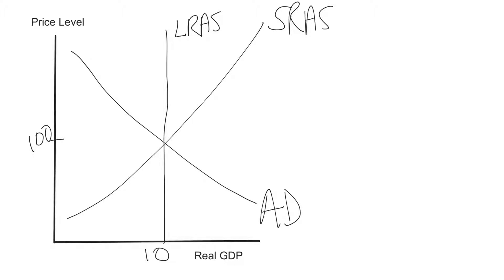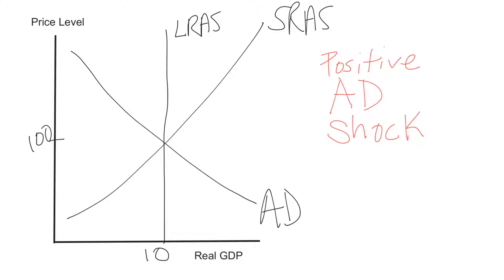There are three things we want to use the static model to demonstrate. The first is a positive aggregate demand shock. 'Positive' means an increasing impact on the curve, 'aggregate demand' is the curve being affected, and 'shock' means the curve has shifted. So aggregate demand has been positively shocked. Why might that happen? Perhaps poorly timed monetary or fiscal policy caused aggregate demand to increase when we didn't need it to. We don't need to worry about why — we want to show how the economy will fix itself.